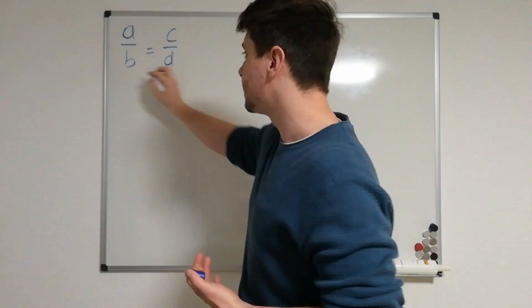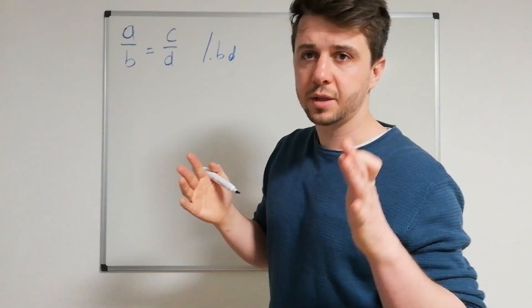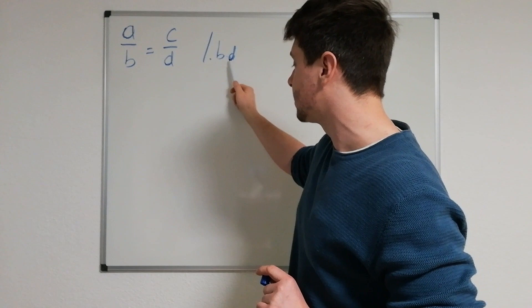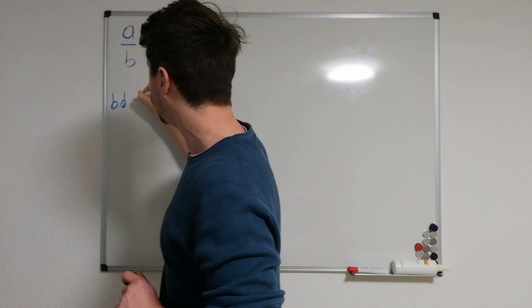Typically you would now multiply by the smallest common denominator, which is b times d. I'll show you how you get there, but it will be very easy in the end. So typically you would go by multiplying times b times d, which then gives you b times d times a through b equals b times d times c through d.